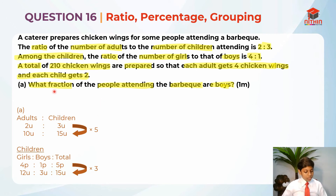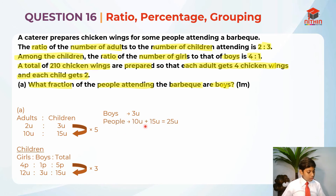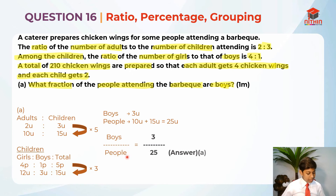They're telling us what fraction of the people attending the barbecue are boys. The boys is 3 units over here. Girls is to boys is to the total is 12 units is to 3 units. So the boys is 3 units. What is the total attending the barbecue? It's 10 units plus 15 units, which is 25 units. So the fraction is 3 over 25. So 3 over 25 is the answer for part A.